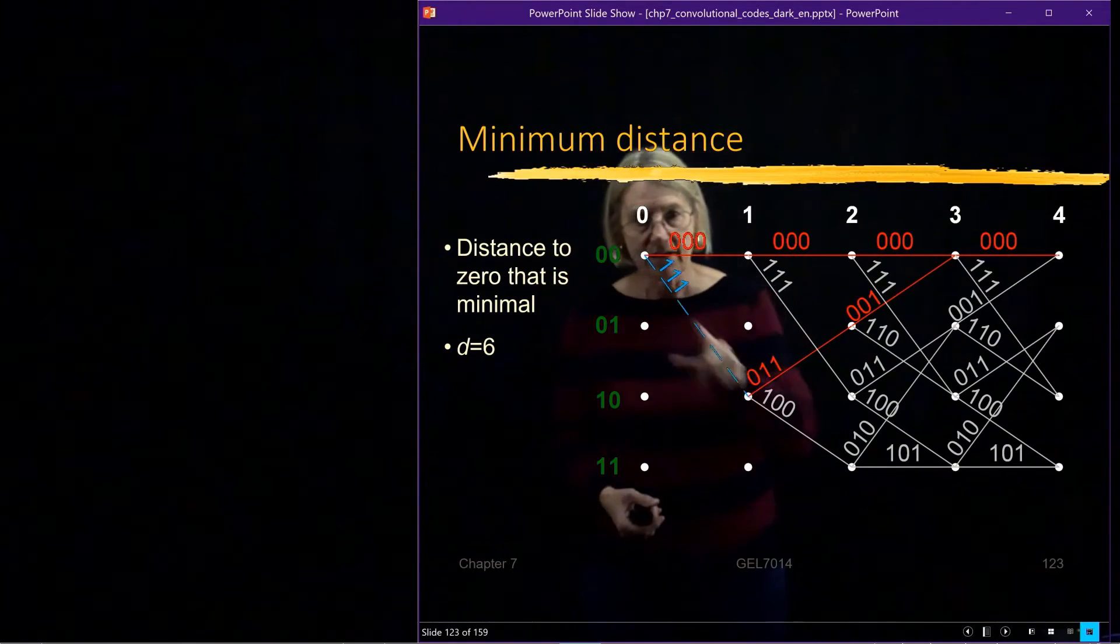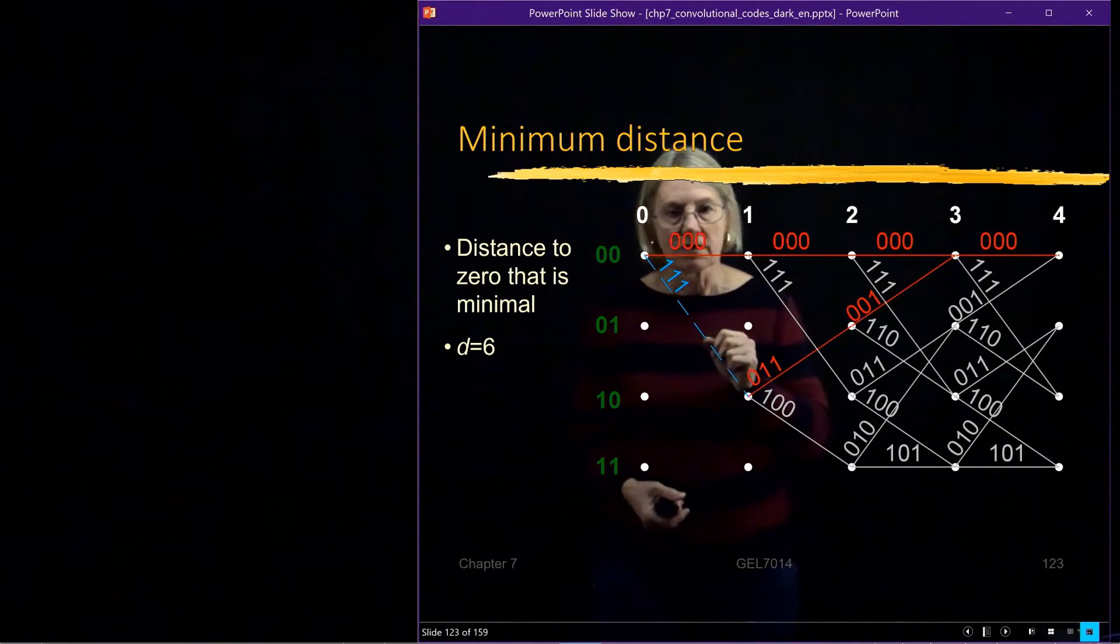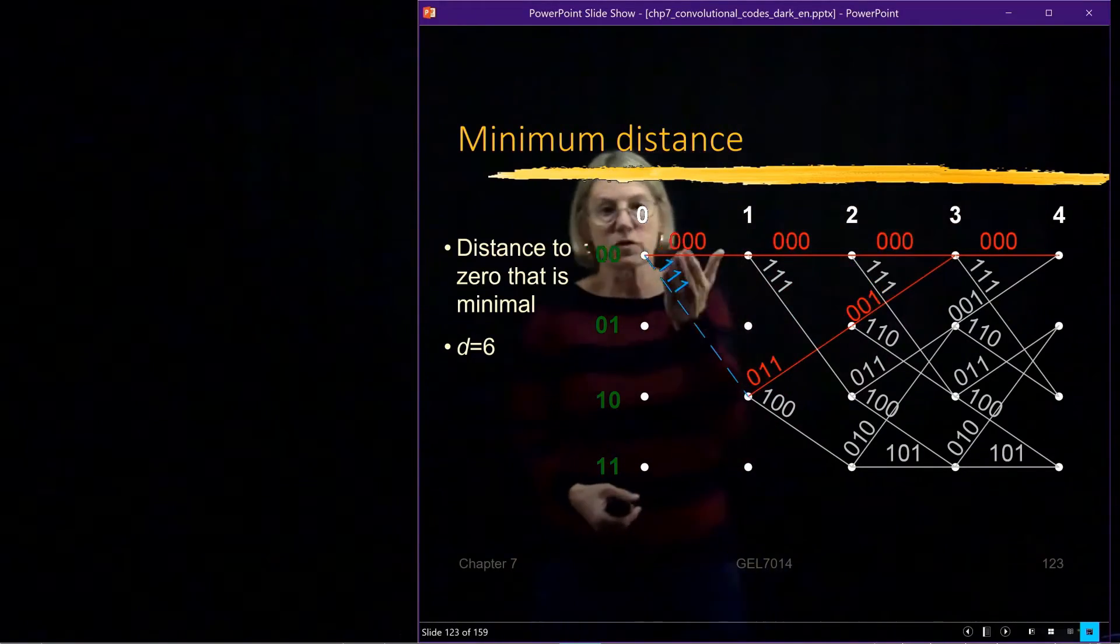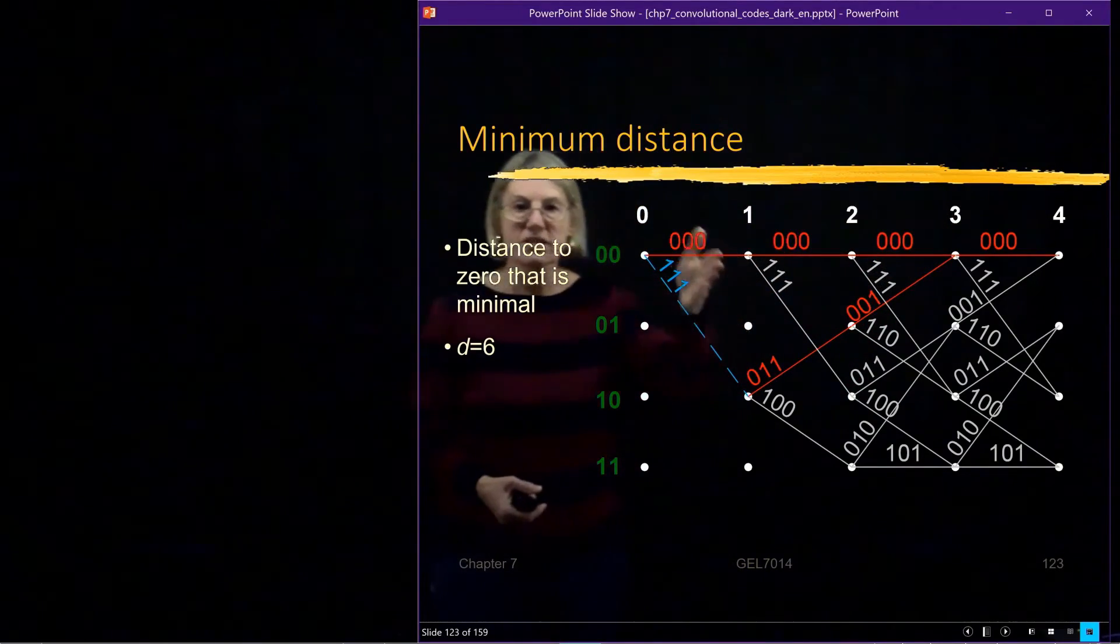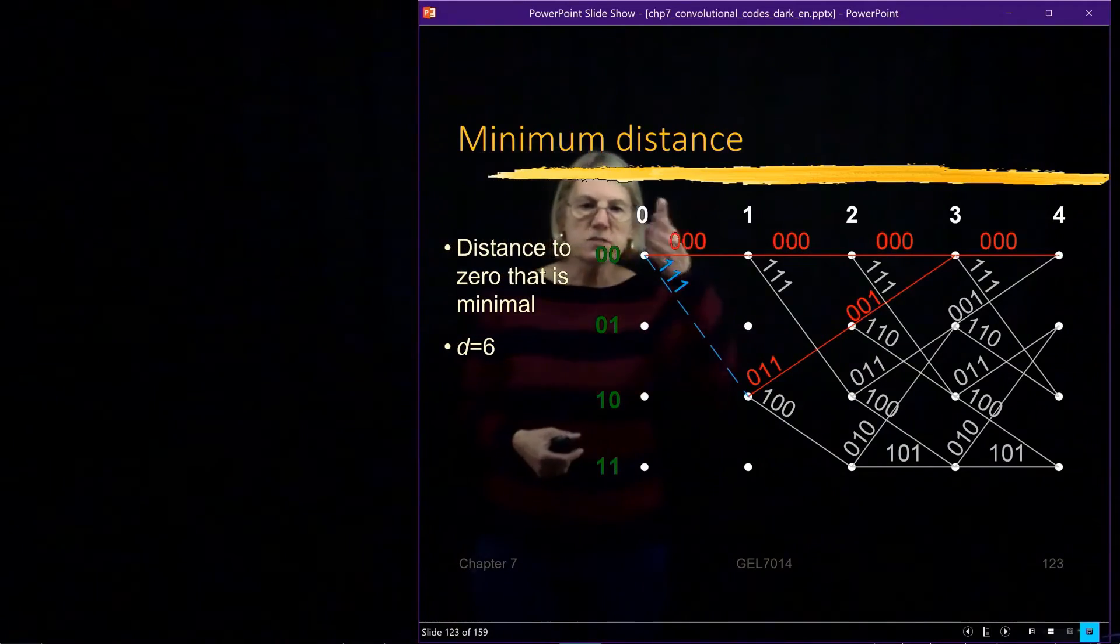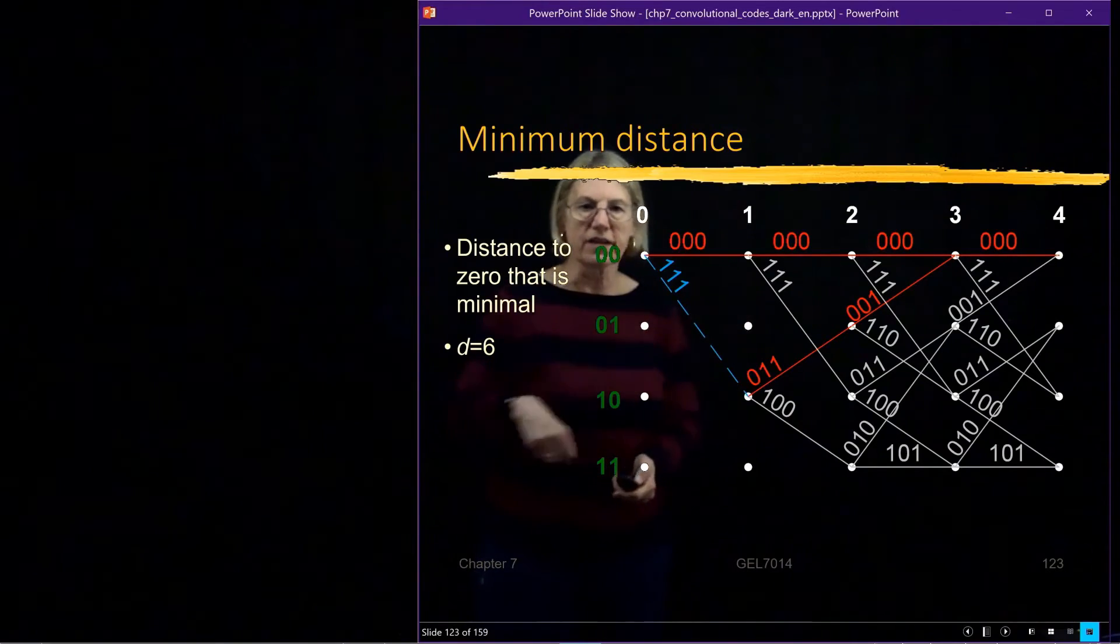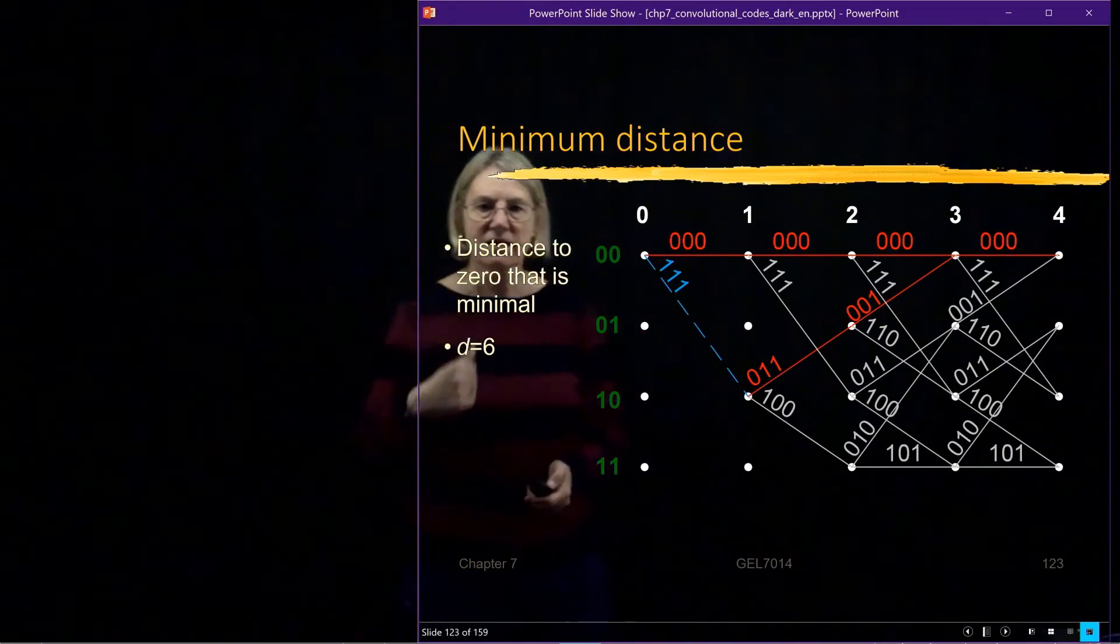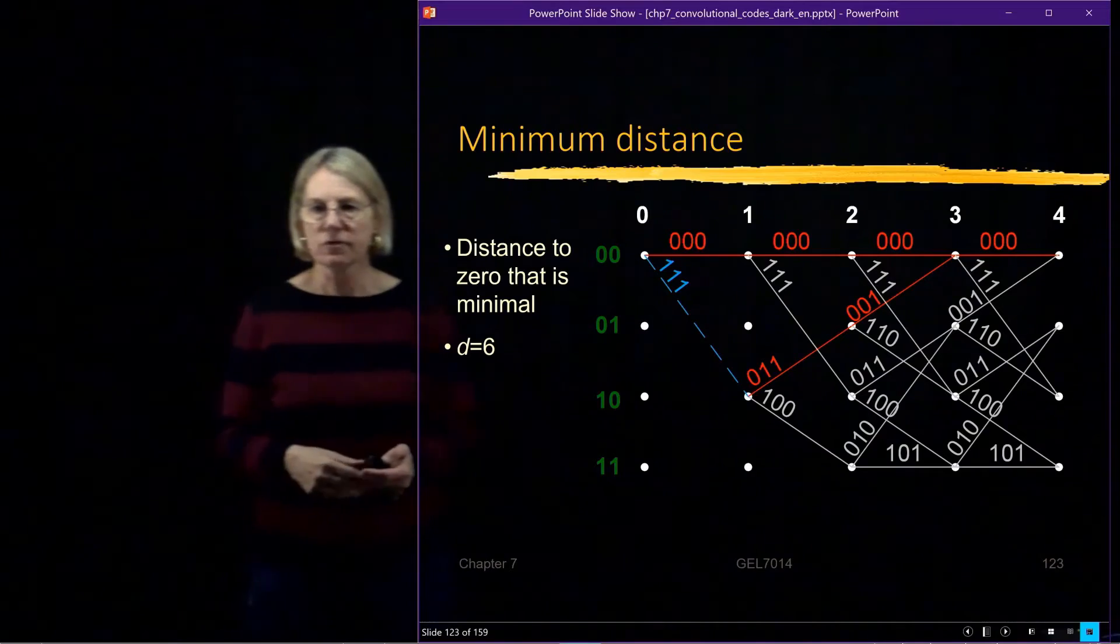There's 3 here, 2 here, 1 there. That makes 6. So the distance between this code and the all-zero code is the number of ones, because this is always 0. So the number of bits that are different are just the number of ones. And we call that the weight of the code. And for this path, it comes up to be 6. And I won't go through all the others, but you can try it yourself, and you'll find that, indeed, the minimal distance is 6. Or we also call that the free distance for a convolutional code.